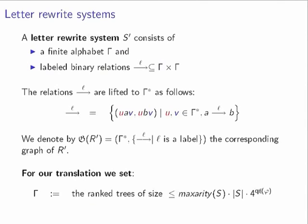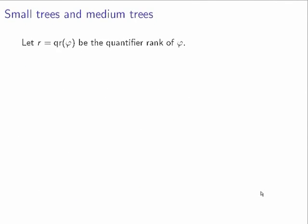The alphabet gamma consists of ranked trees of exponential size. On this finite set we define two subsets: small trees and medium trees. For each quantifier rank i, the small trees are of size at most |ground rewrite system| × 4^i.